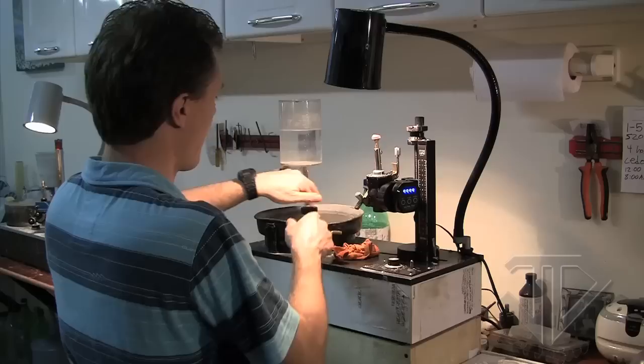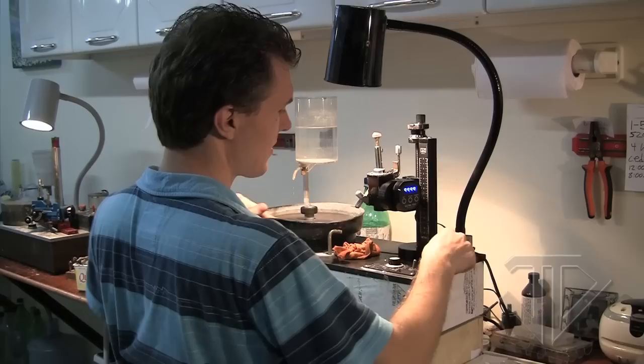The gem is cut one side at a time. Most modern facetors cut the bottom of the gem, or pavilion, first, as these angles are the most important for final beauty.